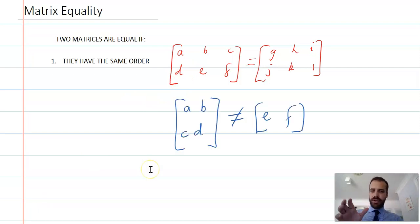Whereas these two matrices definitely aren't equal because they have different orders. So they can only be equal if they have the same order.